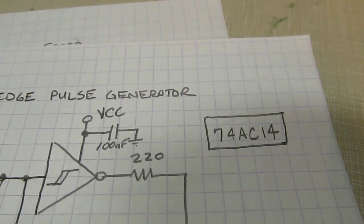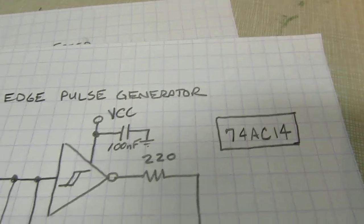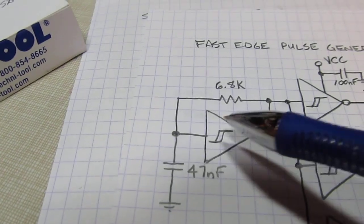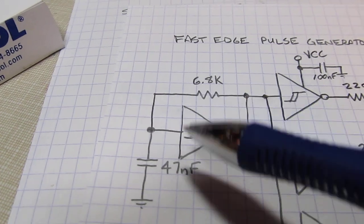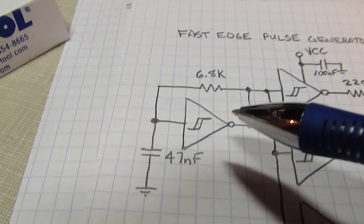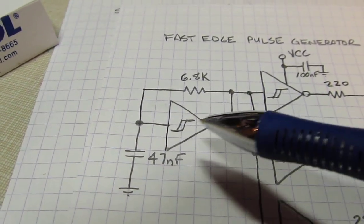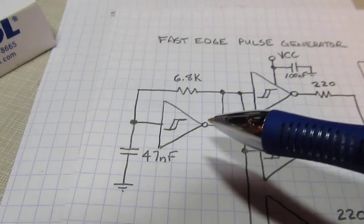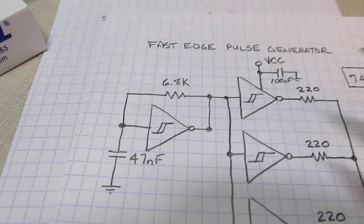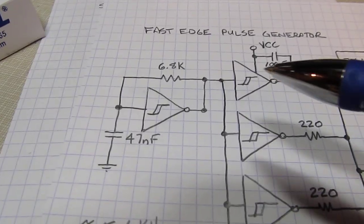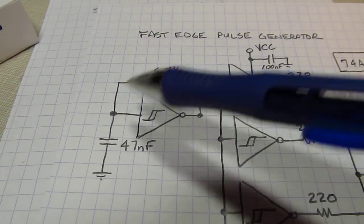This is a 74AC14 Schmidt trigger inverter. This creates an oscillator, about a six kilohertz oscillator. Frequency is not that important. I wanted something relatively slow so we could use this for really long cables where the delay is quite long.